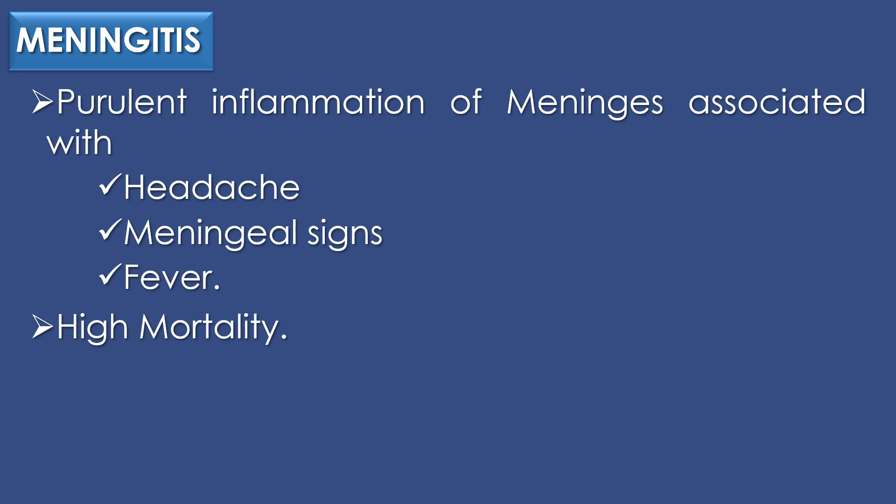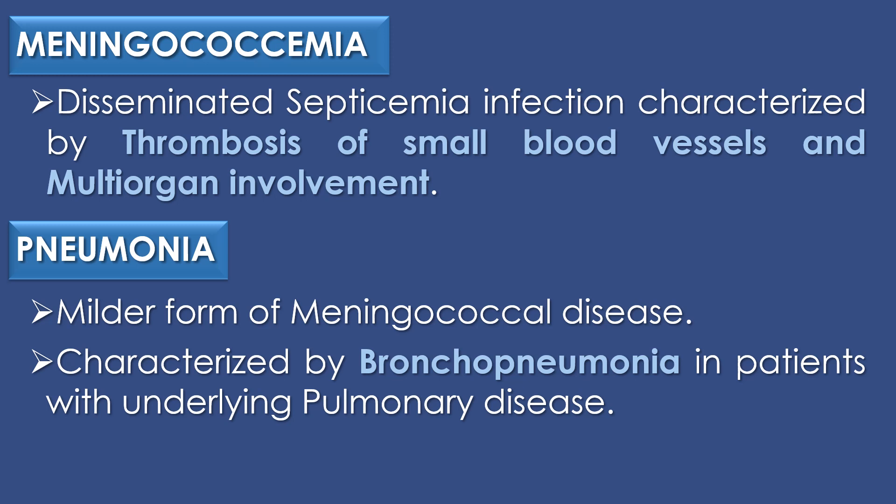The second clinical disease caused by Neisseria meningitidis is meningococcemia. Meningococcemia is a disseminated septicemia characterized by thrombosis of small blood vessels and multi-organ involvement. Thrombosis means the formation of a blood clot inside blood vessels, and meningococcemia results in small petechial skin lesions which extend into large hemorrhagic lesions. The third clinical condition is pneumonia, which is a milder form of meningococcal disease characterized by bronchopneumonia in patients with underlying pulmonary diseases.